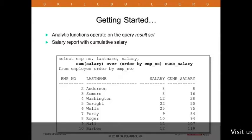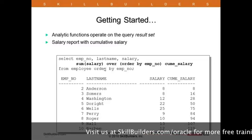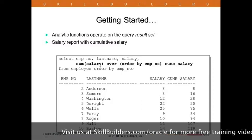Okay, so the analytic functions, here's the first one. Notice we have a sum of salary. We're going to get the employee number, last name, and salary. That's all fairly standard. We're going to order it by employee number, so it's in sorted order by employee number. And then we want a cumulative running total.